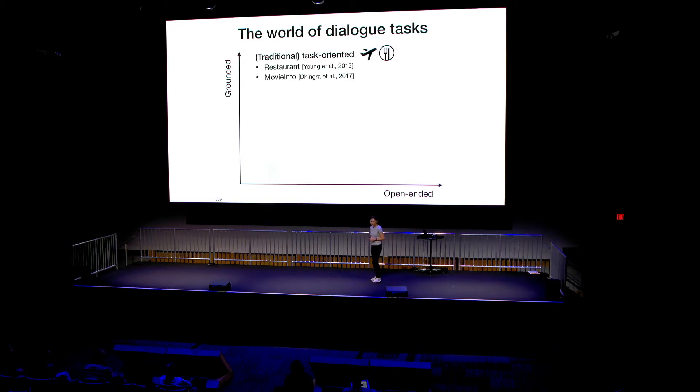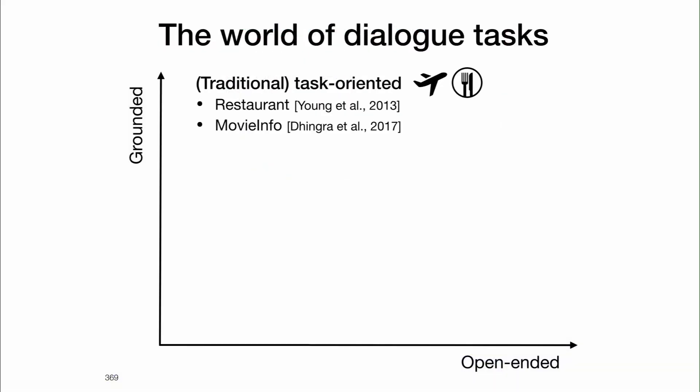On one hand, we have the traditional task-oriented dialogue, such as flight booking or restaurant reservation. These conversations often involve lots of database query. Currently, the dialogue follows the pattern of user asking lots of questions to query information, or the system asks user questions to fill in a form — for example, when booking a flight ticket. So these tasks are grounded, but they're often very narrow domain.